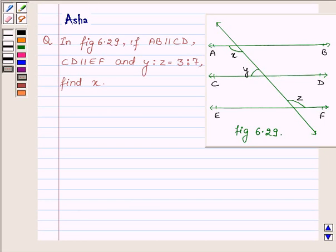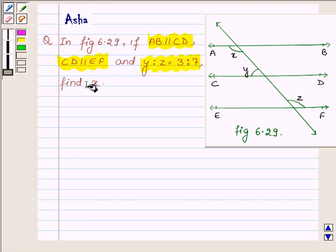Hi and welcome to the session. I am Asha and I am going to help you with the following question: In figure 6.29, if AB is parallel to CD, CD is parallel to EF, and Y:Z = 3:7, find X.